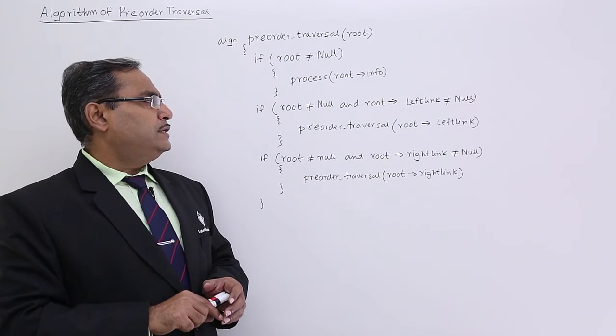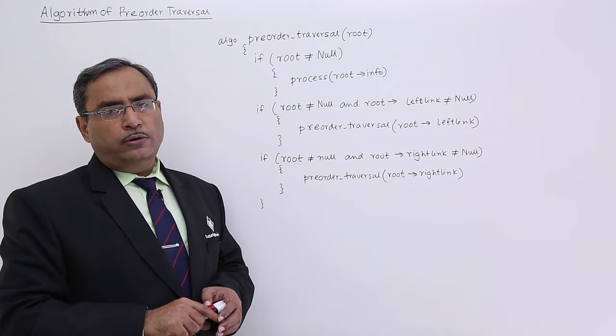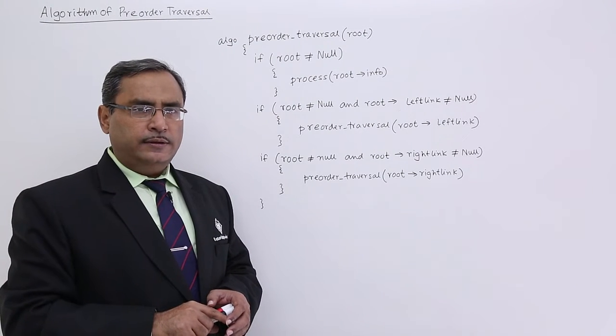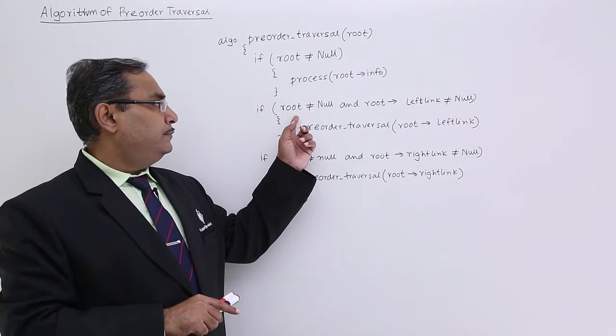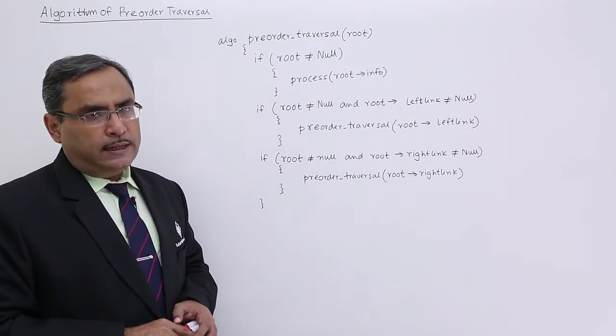So if root is not equal to null and root implies left link is not equal to null, that means the left subtree is existing and tree is also existing. Pre-order traversal root implies left link.